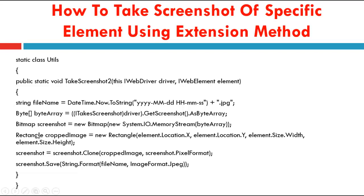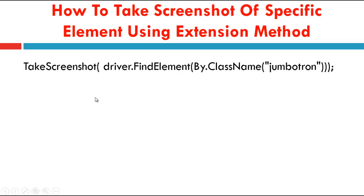Here I am creating an object of the Bitmap class and saving it in memory by passing the byte array variable. Then I am creating an object of Rectangle, where I capture the X and Y coordinate location, and the height and width of the particular element. After that, I use a Clone method to crop the image and store it in a pixel format. Finally, I save it using the screenshot.Save method, passing the file name and the image format. Then I call it in the main method by passing a web element into the method.